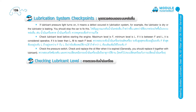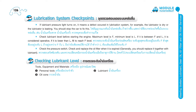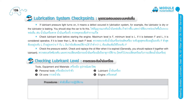Checking lubricant level. Tools, equipment and materials: 1. Personal tools. 2. Lubricant. 3. Oil cone. 4. Engine. Procedures: 1. Pull out the dipstick. Clean it with cloth and then put it back into the engine.